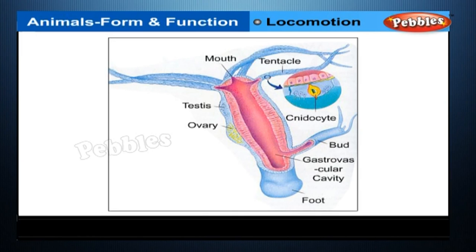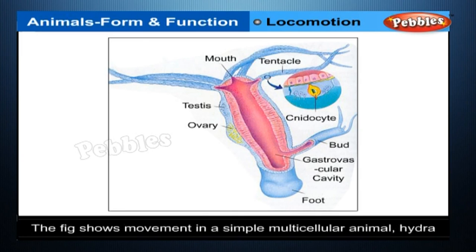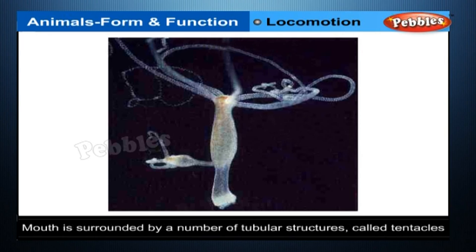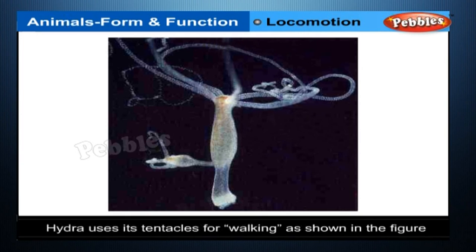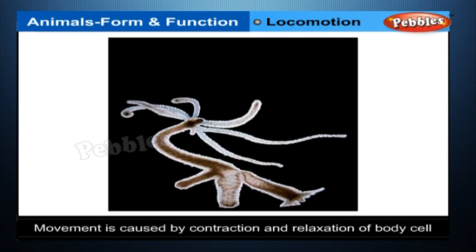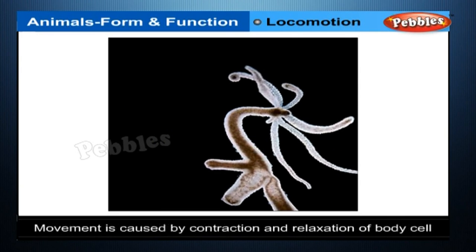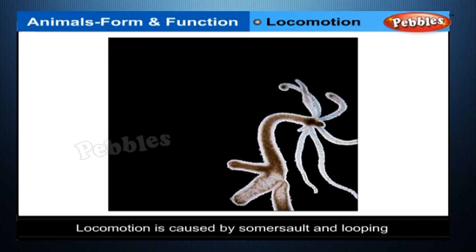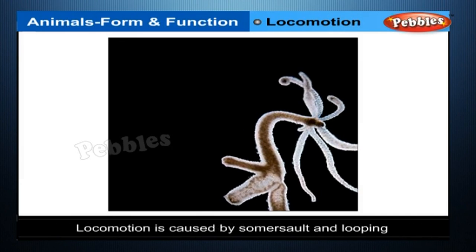Locomotion in Multicellular Animals. The hydra is a simple multicellular animal. At its free end is the mouth, surrounded by tubular structures called tentacles. Hydra uses its tentacles for walking. Movement is caused by contraction and relaxation of body cells, while locomotion is achieved by somersaulting and looping.